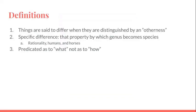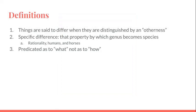So first some definitions. Things are said to differ when they are distinguished by an otherness. That would just be anything which is different between two things, their otherness.